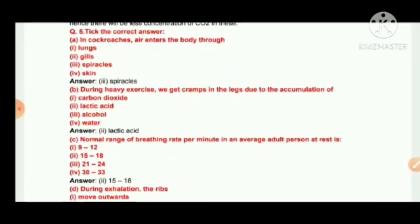Number A, in cockroach, air entered the body through. Option number 1 is lungs, 2 gills, 3 spiracles and 4 skin. But the answer would be spiracles.